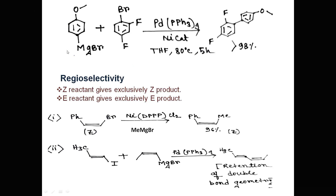Here is another example of Kumada coupling reaction. The aryl halide contains two types of halide: fluorine and bromine. This raises the question of halide selectivity. The rate of the Kumada coupling reaction increases as the halide changes from fluorine to chlorine to bromine to iodine. So bromine reacts first in Kumada coupling, and the bromine position is substituted to give the coupled product in the presence of palladium catalyst.